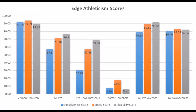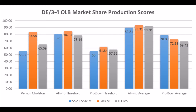Not necessarily — when you actually look at his production data you do start to get some question marks. He only had a 55.06 solo tackle score, an 83.58 sack score, and a 65.09 tackle for loss score. Although he did at least meet the thresholds of pro bowl potential, those are the bottom-end thresholds of the position. He met the thresholds, but essentially at the lowest scores you can possibly make in order to have pro bowl potential.